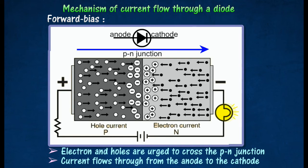Current flow is produced by the movement of holes and electrons in opposite directions across the junction. As a result, the bulb lights up.